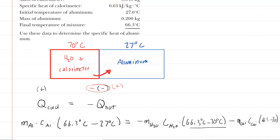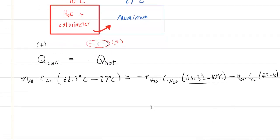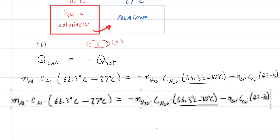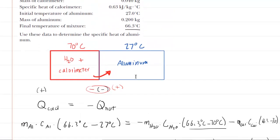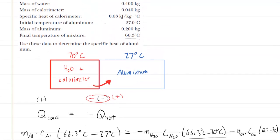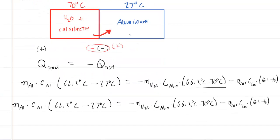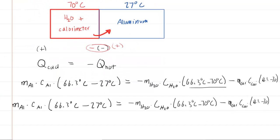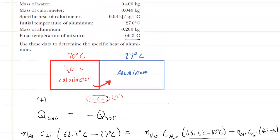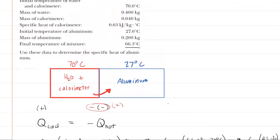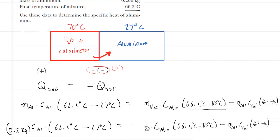We have filled in some of the values so far, but we know other values. Let's go back up and see that the mass of the aluminum was 0.2 kilograms. So we can plug that in. And then the mass of the water was 0.4 kilograms. So we can plug that in accordingly.